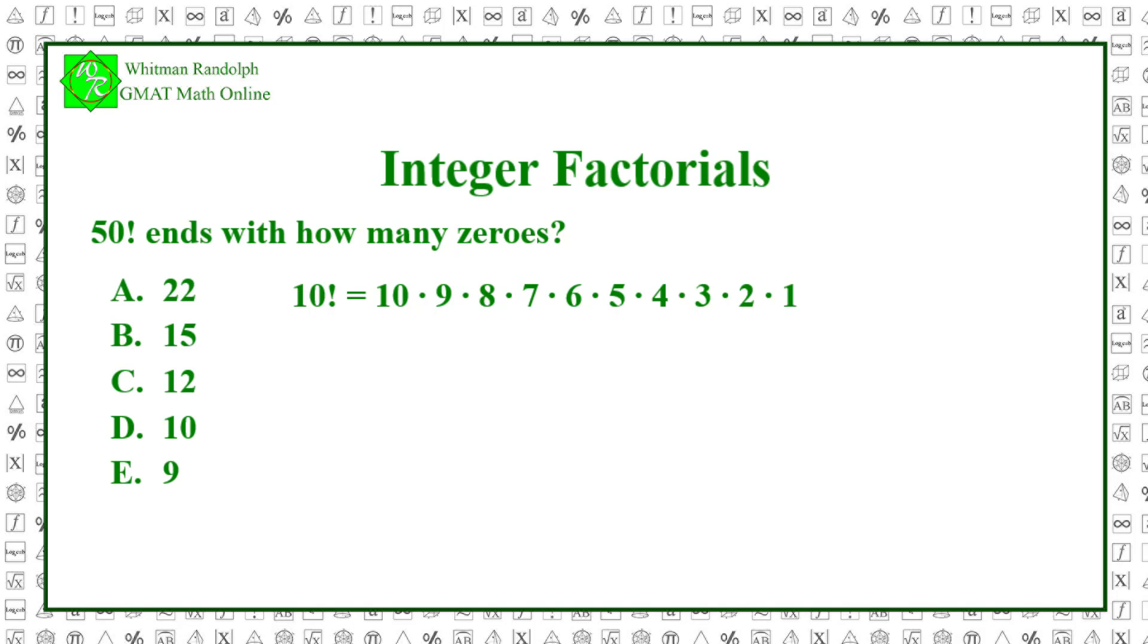As you can see, every second number in the factorial is even so there are plenty of 2's. On the other hand, a number divisible by 5 comes up only once in every five numbers.